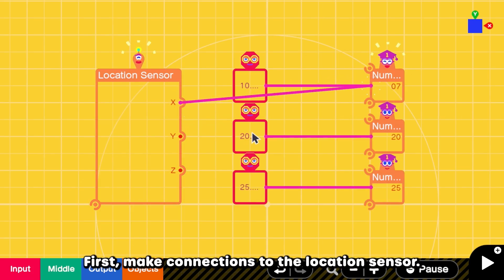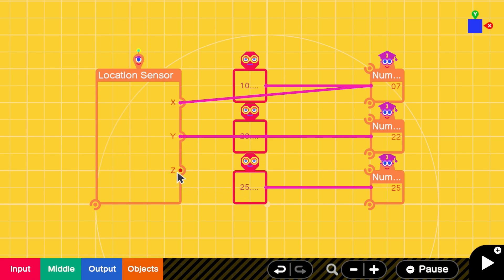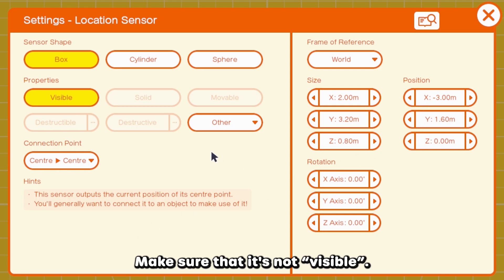First, make connections to the location sensor. Second, open the settings. Make sure that it's not visible.